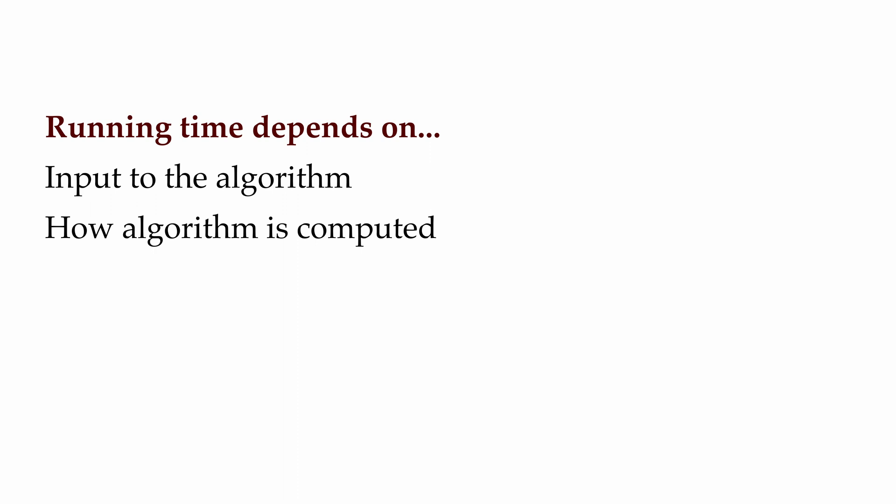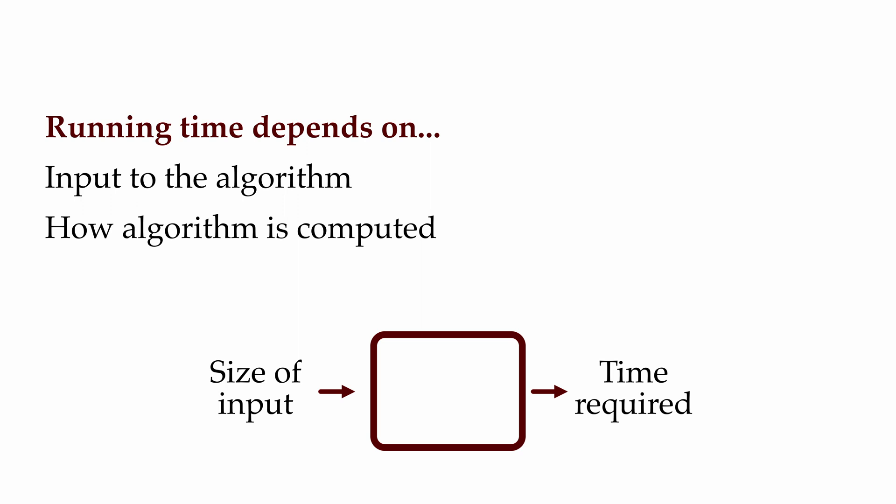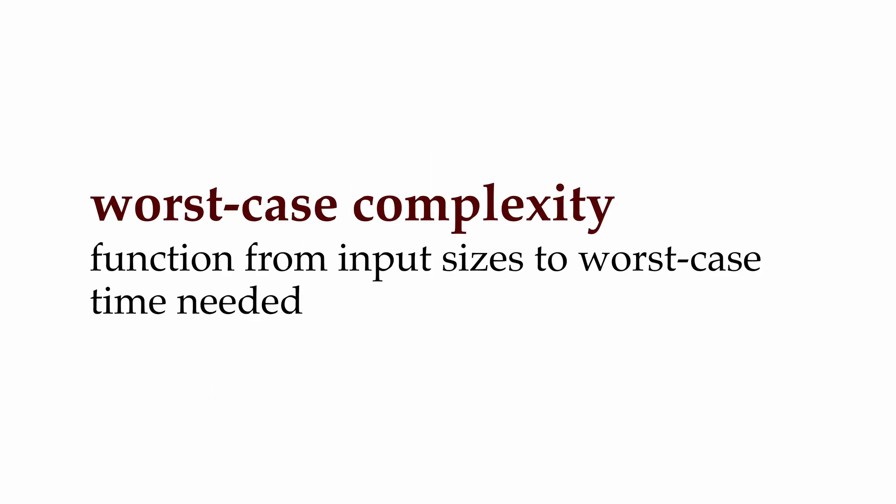To account for differences in input size affecting the time it takes for an algorithm to run, instead of using a single number to describe the performance of an algorithm, we'll describe performance with a function — a function that takes the size of the input and gives us the time required to solve the problem. And since different inputs of the same size might require different amounts of time, we'll often just plan for the worst and consider the worst case complexity: a function from input sizes to the worst case time needed for the algorithm to solve a problem of that size.